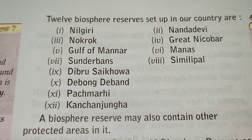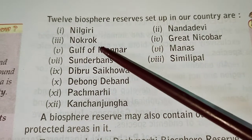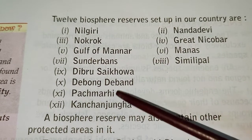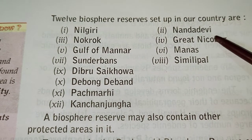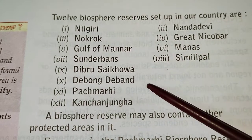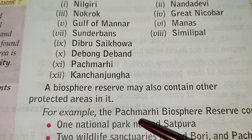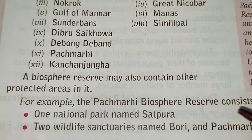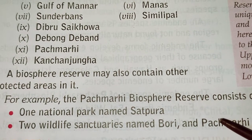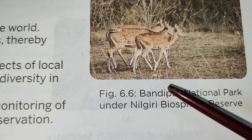Following are the 12 Biosphere Reserves which are set up in our country. A Biosphere Reserve may also contain other protected areas in it. For example, the Panchmari Biosphere Reserve consists of one national park named Satpura and two wildlife sanctuaries named Bori and Panchmari. Also, the Nilgiri Biosphere Reserve consists of Bandipur National Park in it.